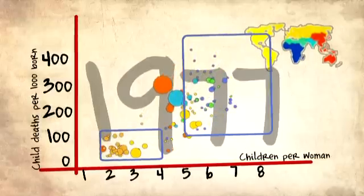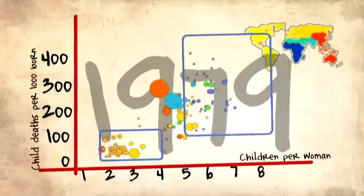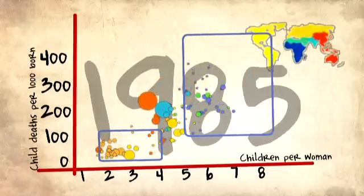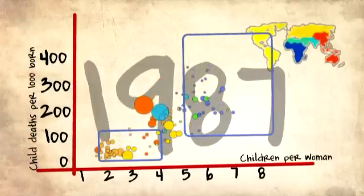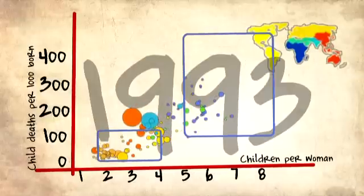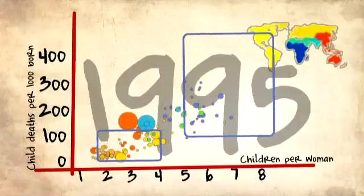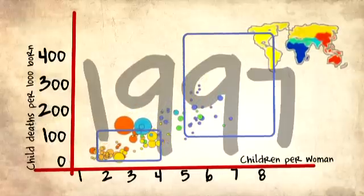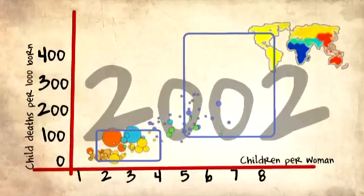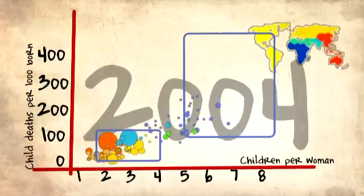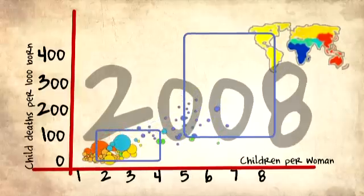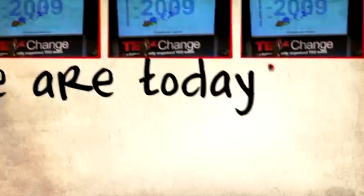China comes into the Western box. Brazil is in the Western box. India is approaching. The first African country is coming into the Western box, and we get a lot of new neighbors. Welcome to a decent life — we want everyone down here. This is the vision we have. And look, the first African countries are coming in. There we are today. There is no such thing as a Western world and a developing world.